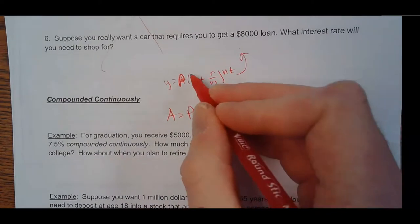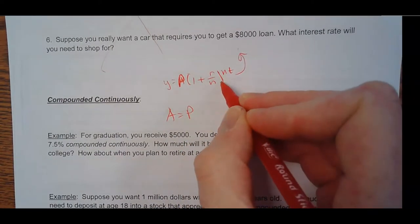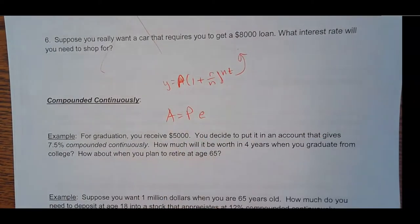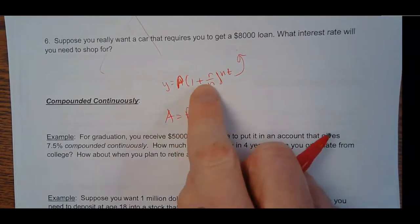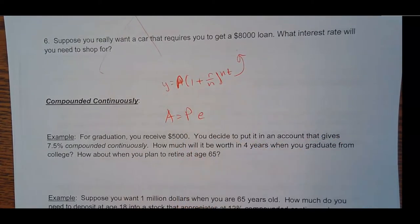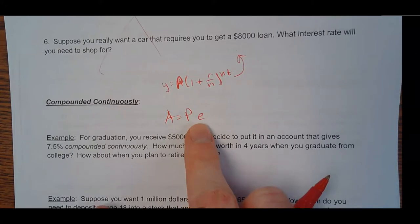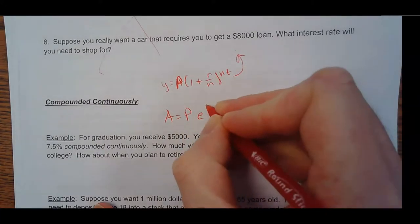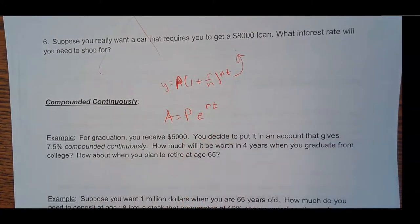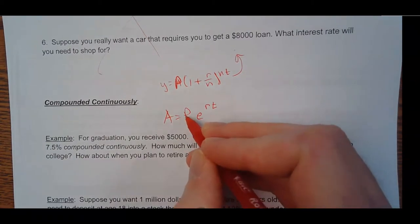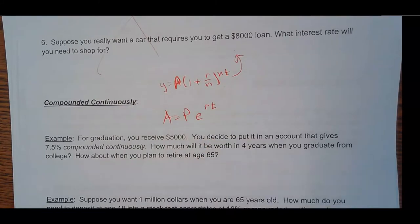But now instead of having this rate in parentheses, it's just the base is E. So here the base was 1 plus whatever your rate was divided by the number of compounds a year. Here it's E. And then your rate goes into the exponent along with time. So a lot of people just memorize it as PERT, P-E-R-T. Well, it's P times E to the RT power.